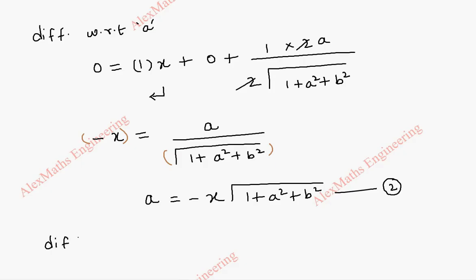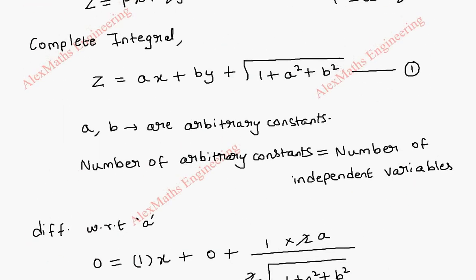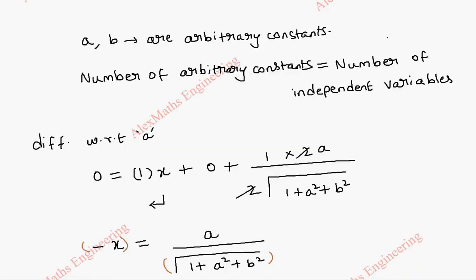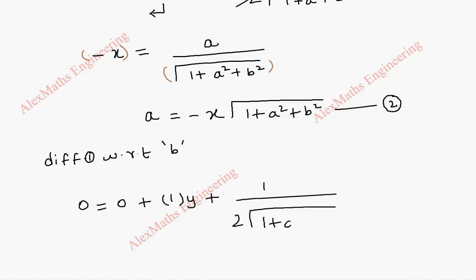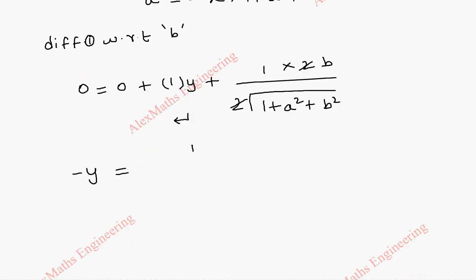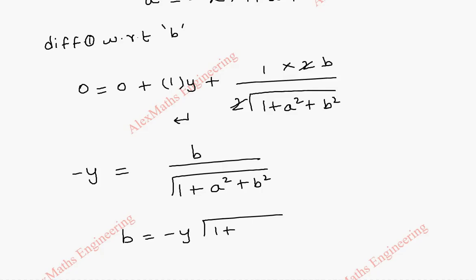In the same way, we are going to take the differentiation of the complete integral with respect to b. z differentiation is 0, and ax is a constant so 0. b differentiation is 1 and y is a constant. Root differentiation is 1 by 2 root of 1 plus a square plus b square, and by chain rule this differentiation is 2b. We cancel and take y to the other side. So, minus y equal to b by root of 1 plus a square plus b square. By cross multiplication, we get b equal to minus y root of 1 plus a square plus b square. Let's take this as the third expression.